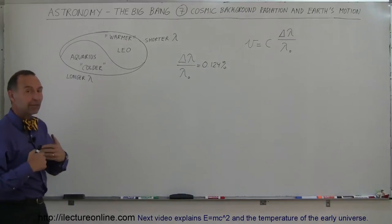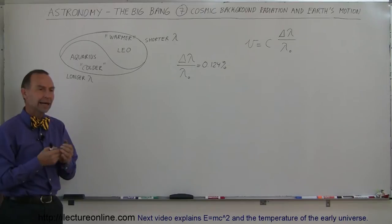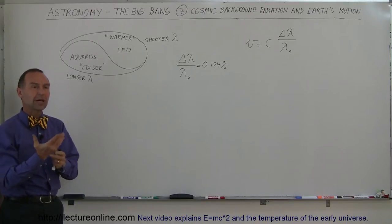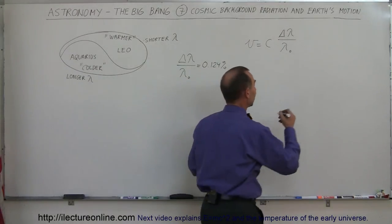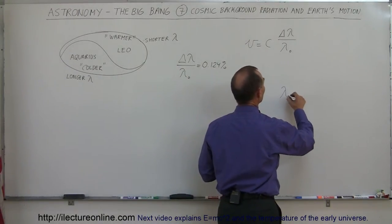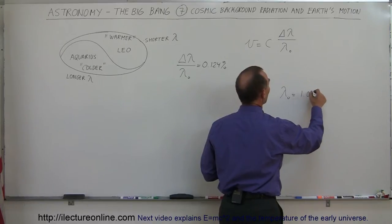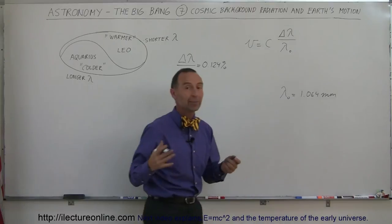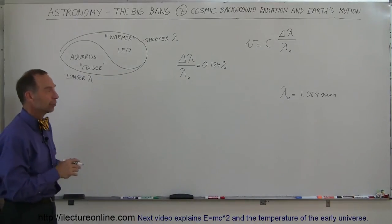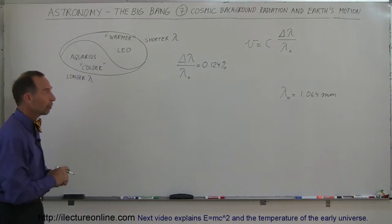We had sent COBE the satellite up into space in 1989 to study the cosmic background radiation very carefully and from that we got a very accurate reading for the wavelength of the radiation in space. The radiation was equal to 1.064 millimeters in length associated with a temperature of the universe about 2.74 Kelvin, 2.74 degrees above absolute zero.